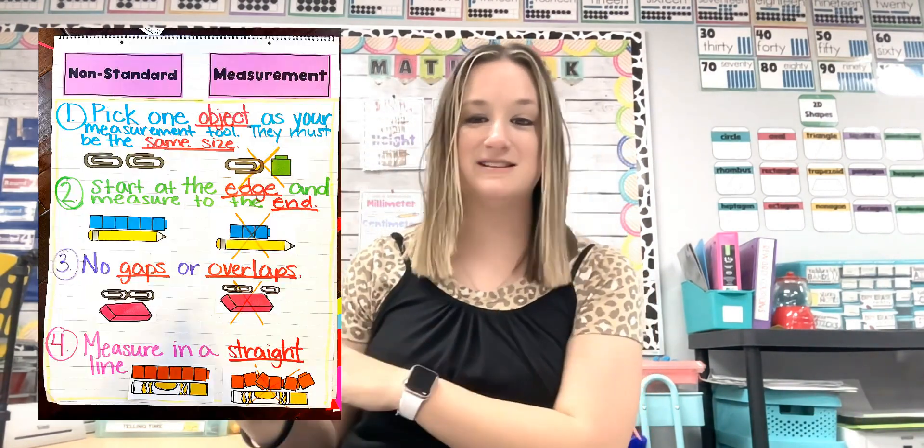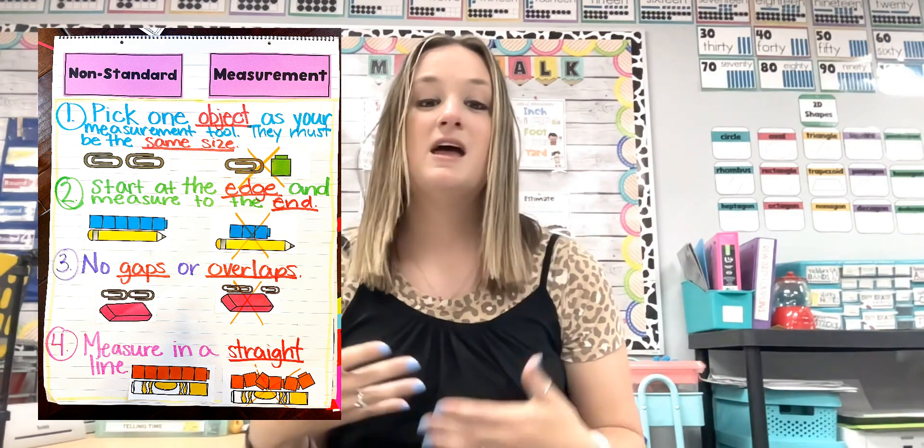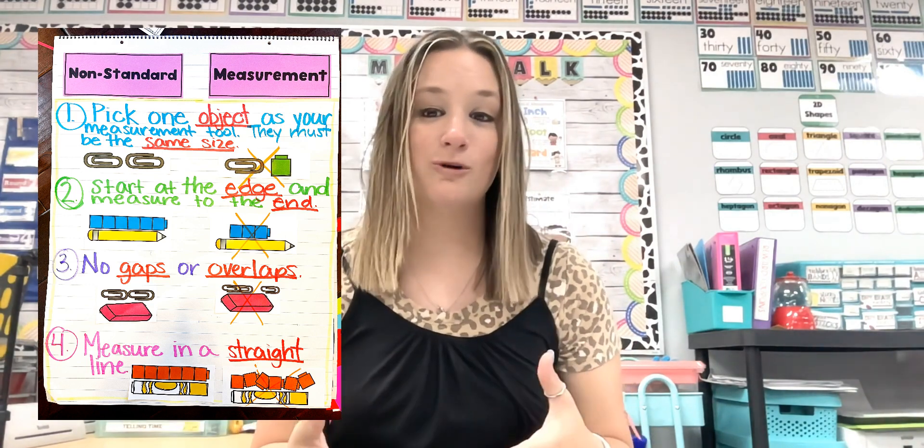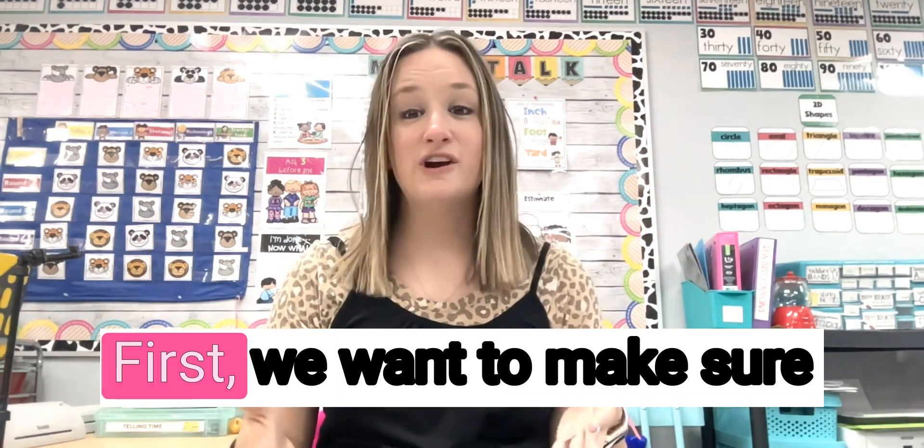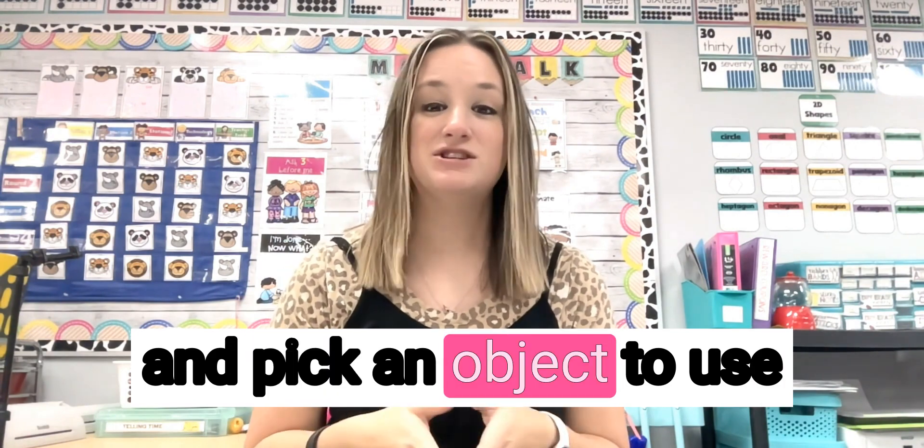When first introducing non-standard measurement, we actually create an anchor chart as a class together so that we can learn the rules. As we are creating our whole group chart, the kids are also creating a mini version of the same chart in their math journals. This allows them to have it as a reference to look back on and use during their independent work. First, we want to make sure and pick an object to use as our measurement tool — they need to be the same size and the same tool. We don't want to be measuring an object using different tools such as a paper clip and a unifix cube.